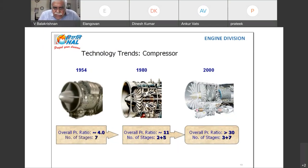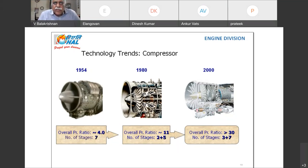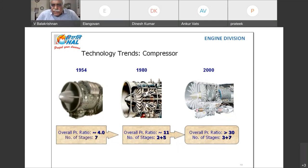From 2000 onwards, we have overall pressure ratio increased to 30 and above, and number of stages have increased to 3 LP and 7 HP. Even if we look at the AL-31FP engine, which is powering the Sukhoi-30 MKI aircraft, it has 4 stages of LP and 9 stages of HP.